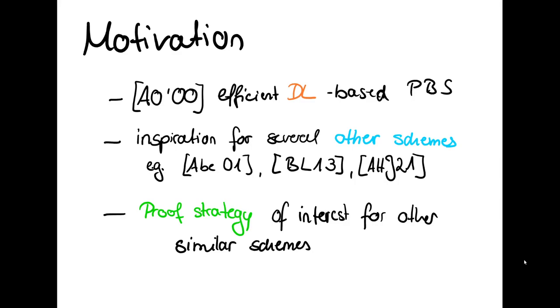Examples of such schemes are the scheme by Abe which is a computationally blind signature scheme, the anonymous credential slide scheme, and also the recent lattice-based blind OR. The proof strategy from the Abe Okamoto paper is of interest for other schemes that use this OR proof technique.